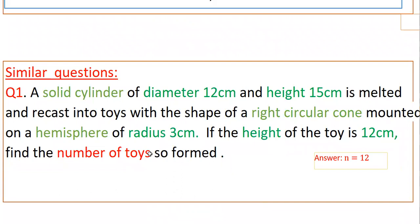Now please do this similar question. Here the height of the cone is 12 centimeters, that is including the hemisphere. So you have to subtract the hemisphere radius of 3 centimeters from the 12 centimeters to get the height of the cone. So height of the cone is 12 minus 3 equals 9 centimeters, and the hemisphere radius and the cone's radius is the same, that is 3 centimeters.